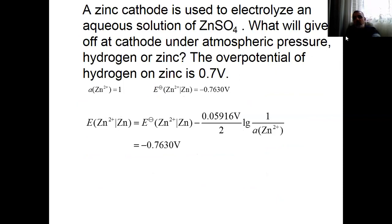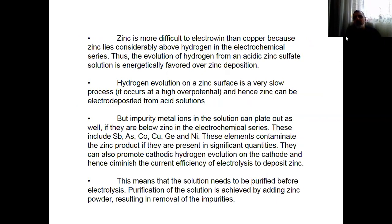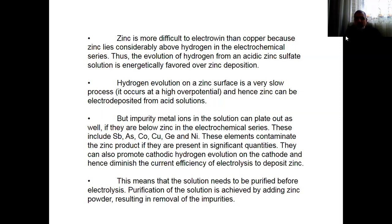Due to overpotential of hydrogen, zinc is more difficult to electrowin than copper, because zinc lies considerably above hydrogen in the electrochemical series. Remember the EMF series. Thus the evolution of hydrogen from an acid with a zinc surface solution is energetically favored over zinc deposition as I explained earlier. Hydrogen evolution on a zinc surface is a very slow process — it occurs at a high overpotential. Hence zinc can be won from acid solution.